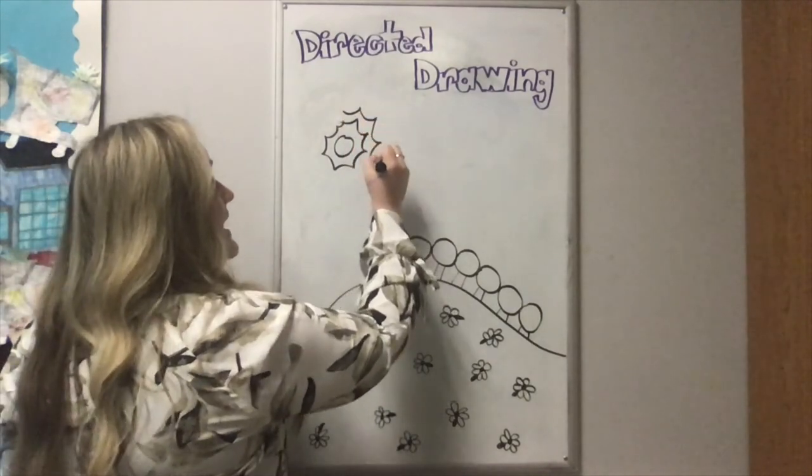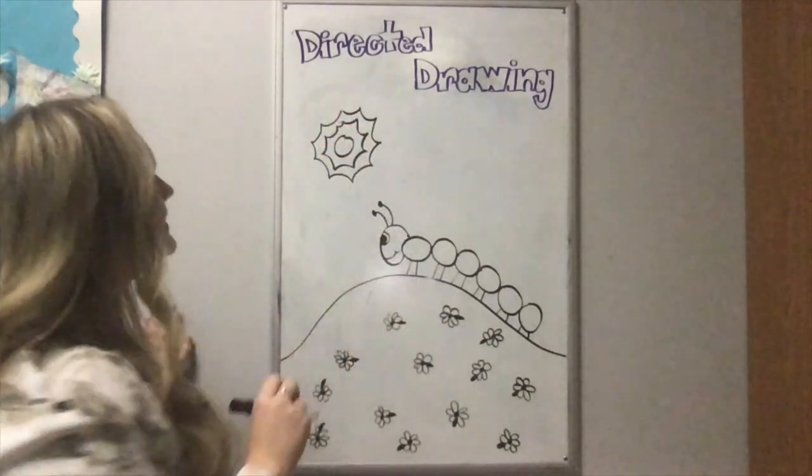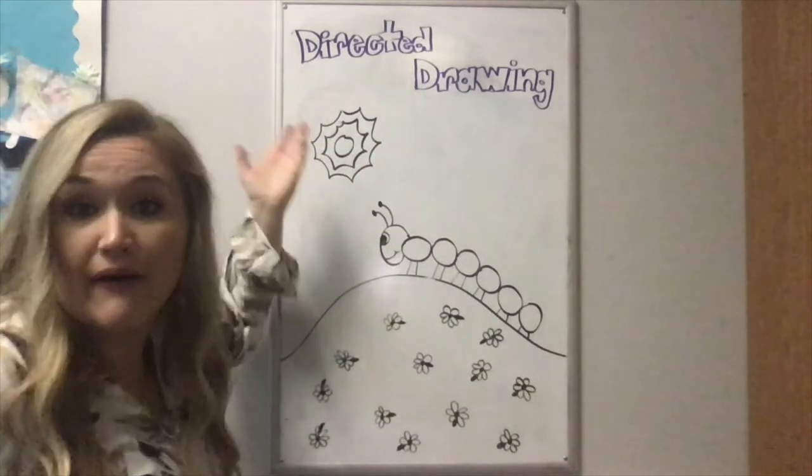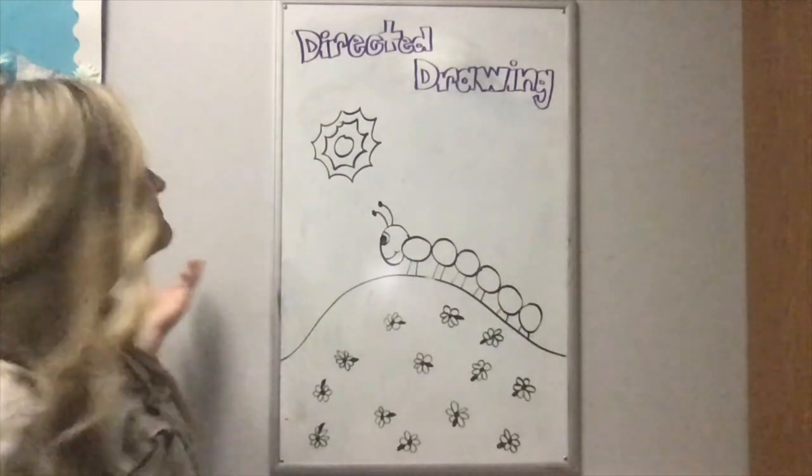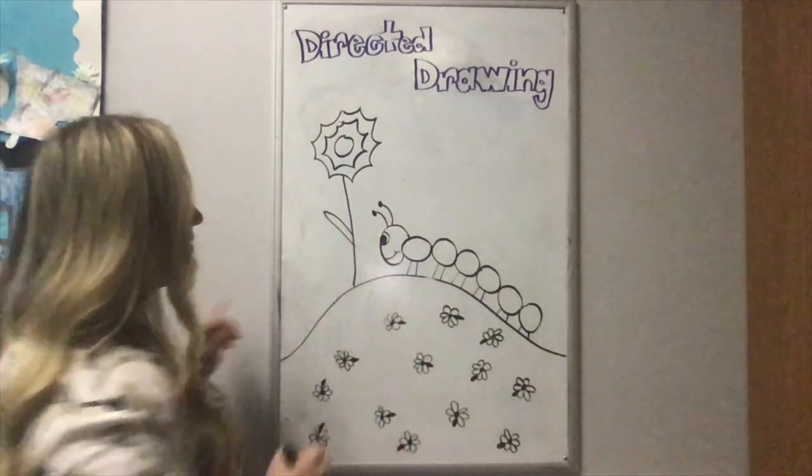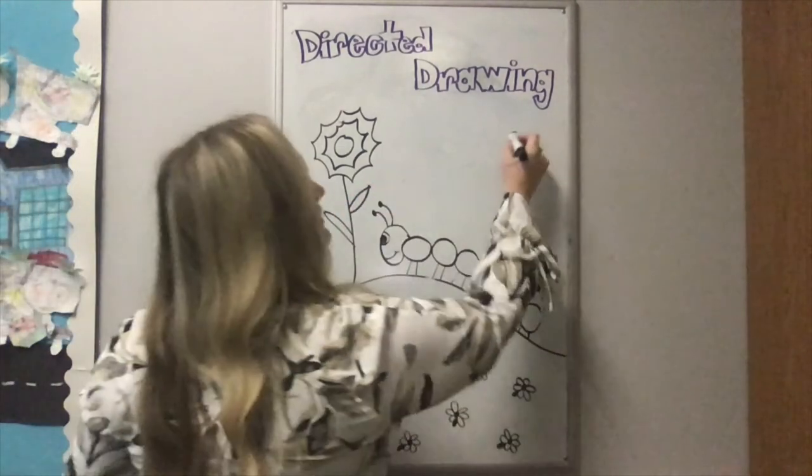That could be a beautiful sun. Hey, that could even be a flower. All you got to do is add stems to it. That's so funny. Look, it's like the caterpillar is trying to get to the flower. And then you add a sun over here if you want.